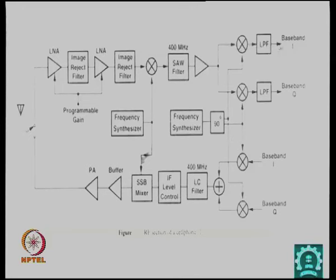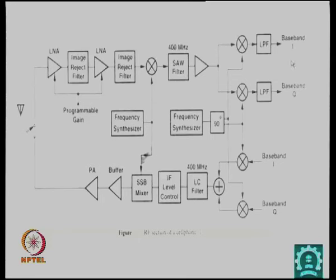The baseband has I and Q channels, requiring two mixers and two low-pass filters. On the transmitter side there are filters, IF level controllers, single sideband mixers, both sideband mixers, buffers, power amplifiers, and frequency synthesizers such as PLLs. This is the typical RF part of a mobile phone.